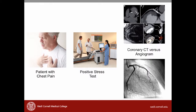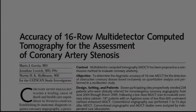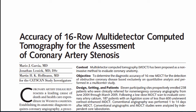Let's review the case and the article that we chose. You're seeing a patient who has chest pain and a positive stress test, and he asks you if you could do a coronary CAT scan instead of an angiogram to diagnose coronary artery disease. You came up with this PICO question: in patients with a high likelihood of coronary artery disease, is multi-detector computed tomography versus angiogram effective at diagnosing coronary artery disease? You then searched the literature and found this article published in JAMA that compared multi-detector CT versus angiogram.